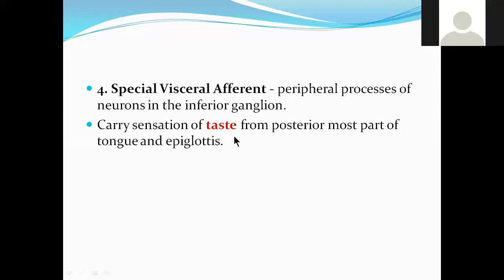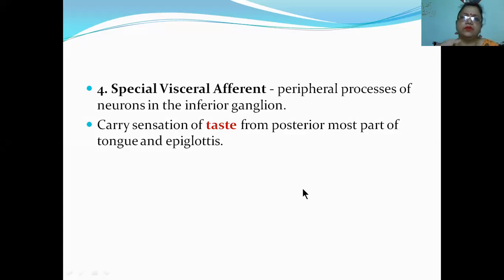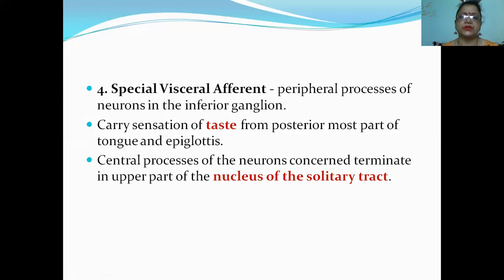Why special? Because it is taste sensation. Visceral means it is from the tongue. Afferent means it is taking sensory. The posteriormost part of the tongue including the epiglottis is developed from the fourth arch, that's why it is supplied by the superior laryngeal nerve. Vocal cord onwards is from the sixth arch, so it goes by the recurrent laryngeal nerve.